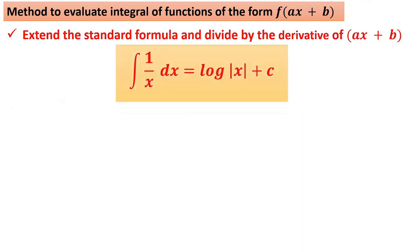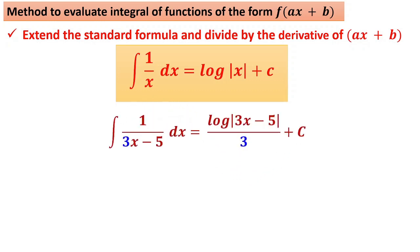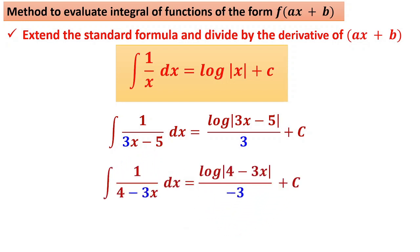Similarly, the formula ∫(1/x) dx = log x. If you have 1/(3x − 5), it becomes log|3x − 5| divided by 3 — the coefficient of x — or divided by the derivative of (3x − 5). Once again, if the coefficient of x is negative, be careful: for log|4 − 3x|, divide by the derivative of (4 − 3x), which is −3.